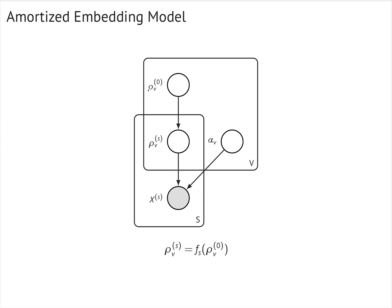For each group s, we learn a neural network that maps the global embeddings to the group-specific embeddings. We use stochastic gradients to learn the context vector, the global embeddings, and the neural net parameters for amortization.